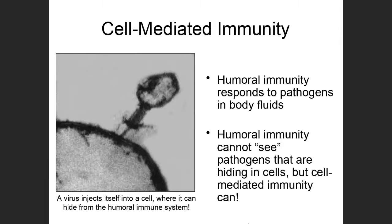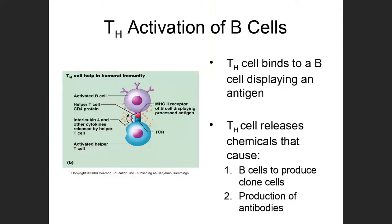That's where cell-mediated immunity comes in — it's the second branch of adaptive immunity that goes after harmful substances hiding out in your own body's cells. When we were looking at humoral immunity, the major cell type that gets things going are the B cells, or B lymphocytes. With cell-mediated immunity, that role is played by T cells, or T lymphocytes — the white blood cells that complete their maturation within the thymus.